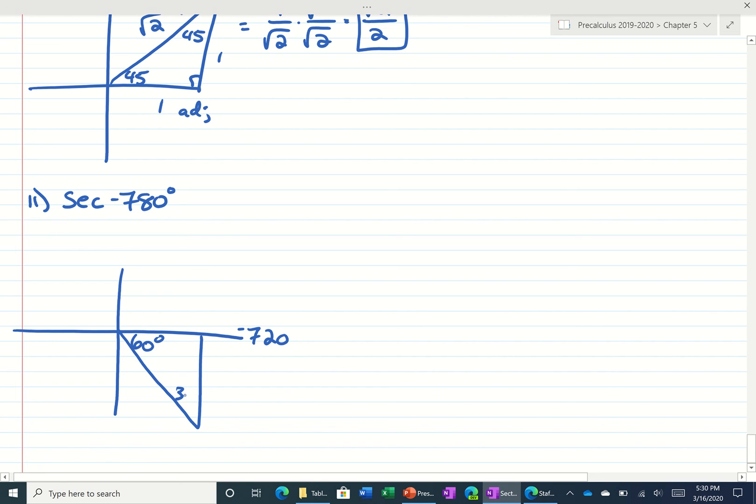So that's 60, this is 30, this is 90, 1, 2, root 3. Anytime you go left, it's negative. So the secant would be the reciprocal of cosine. Cosine of negative 780 would be 1 over 2. So the secant of negative 780 would be 2 over 1, or just 2.